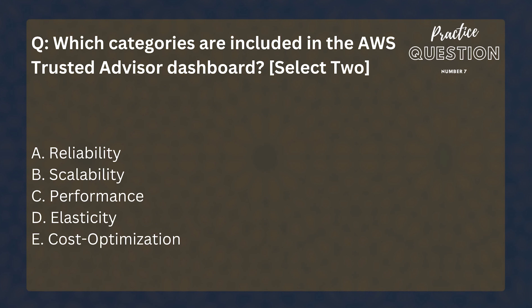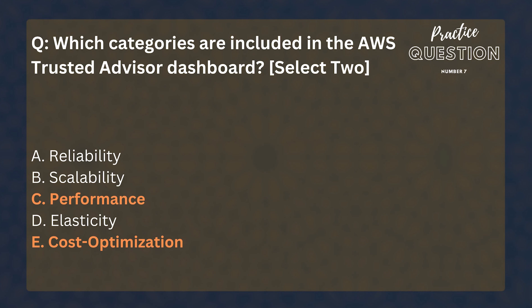Which categories are included in the AWS Trusted Advisor dashboard? Select two answers: Reliability, Scalability, Elasticity, Cost optimization. The answer is C and E. If you can recall the names of the five categories of Trusted Advisor, you can see that A, B, and D are invalid answers.